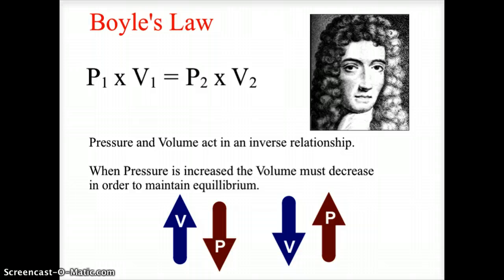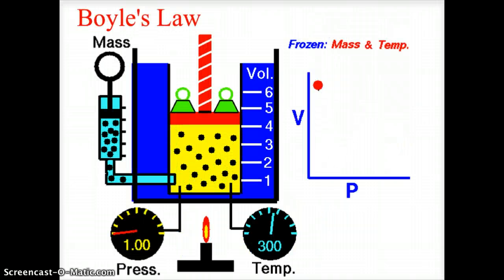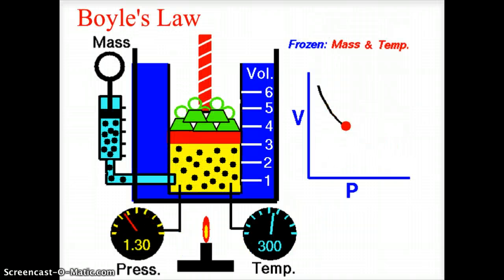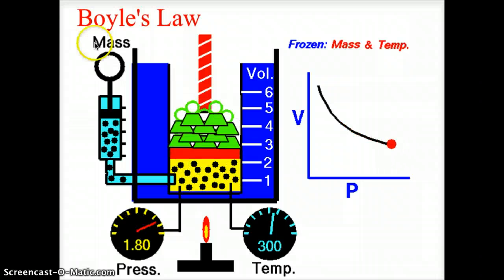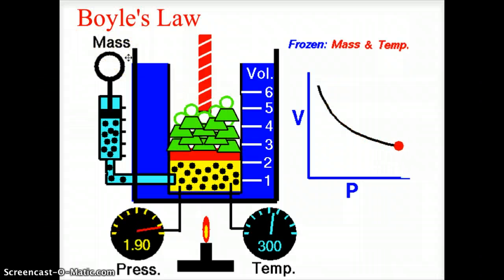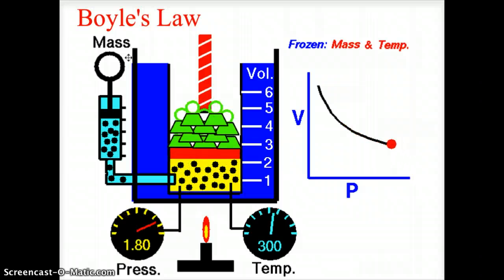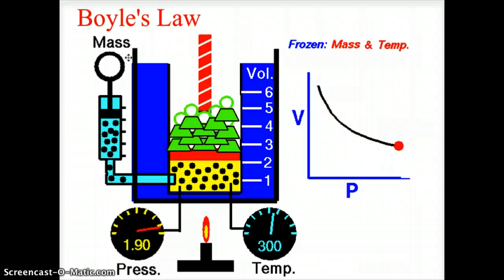Let's look at an example using a Boyle's law machine. Now this Boyle's law machine, first off, is acting at a constant temperature, 300 degrees Kelvin. Notice the temperature gauge is not changing at all.